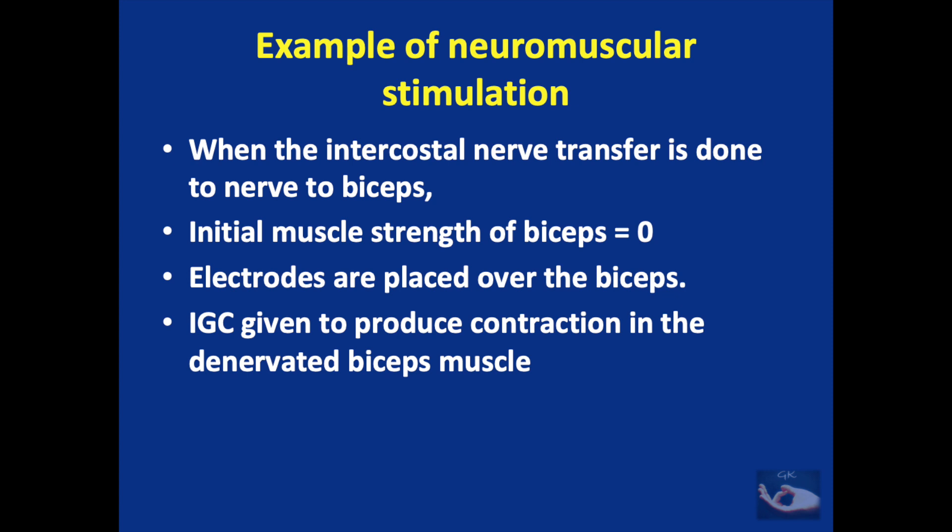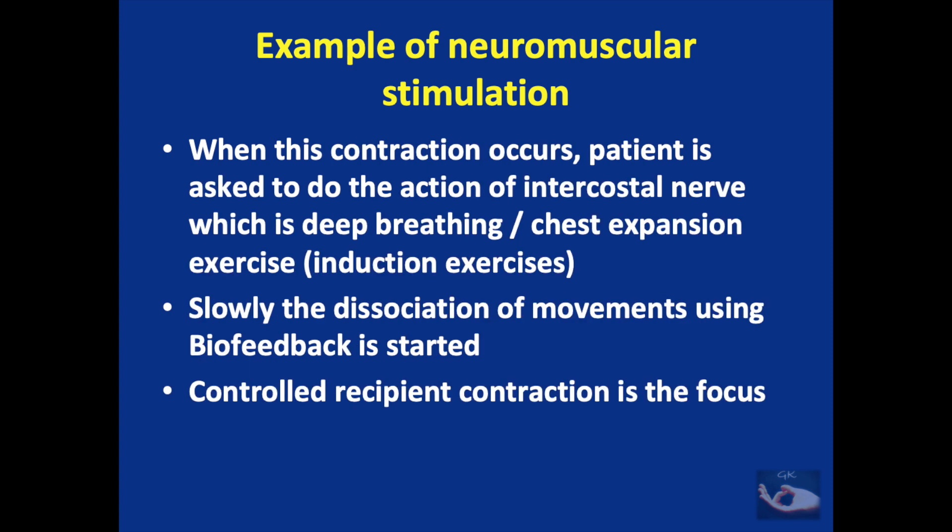The electrodes are placed over the muscle of the recipient nerve, producing contraction and keeping the neuromuscular junction units active while facilitating growth of the affected recipient nerve. For example, when an intercostal nerve transfer is done to the nerve to the biceps, the initial muscle strength is zero. IGC is given to produce contraction in the denervated biceps. When contraction occurs, the patient is asked to do the action of the donor nerve — the intercostal nerve — which is deep breathing or chest expansion. These are called induction exercises. Slowly, dissociation of movements using biofeedback is started, so the patient can contract the biceps without the induction of deep breathing.